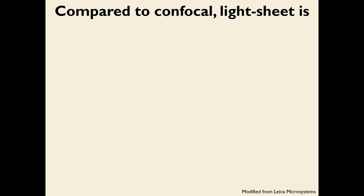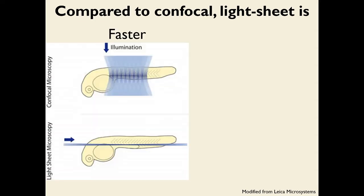Why would you want to use light sheet microscopy? Light sheet is intrinsically an optical sectioning technique — it allows you to see parts of the sample independent of other parts without the need for mechanically slicing it. Another technique with that property is laser scanning confocal microscopy. Compared to a confocal, light sheet microscopy is much faster.